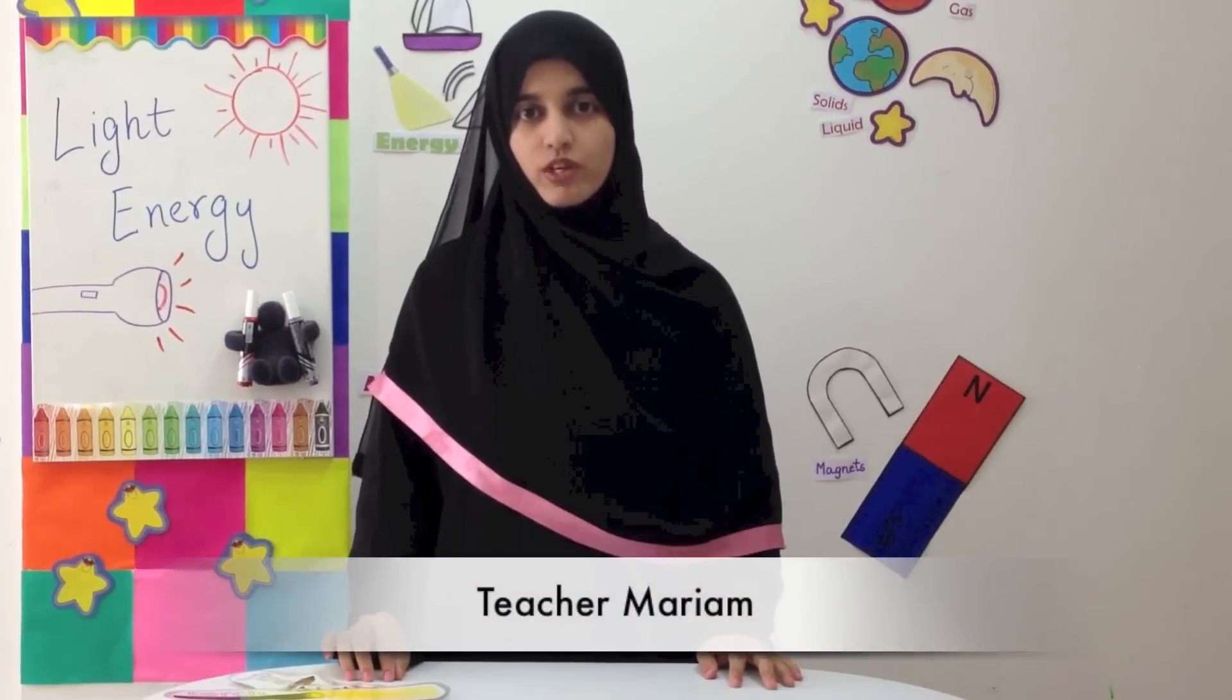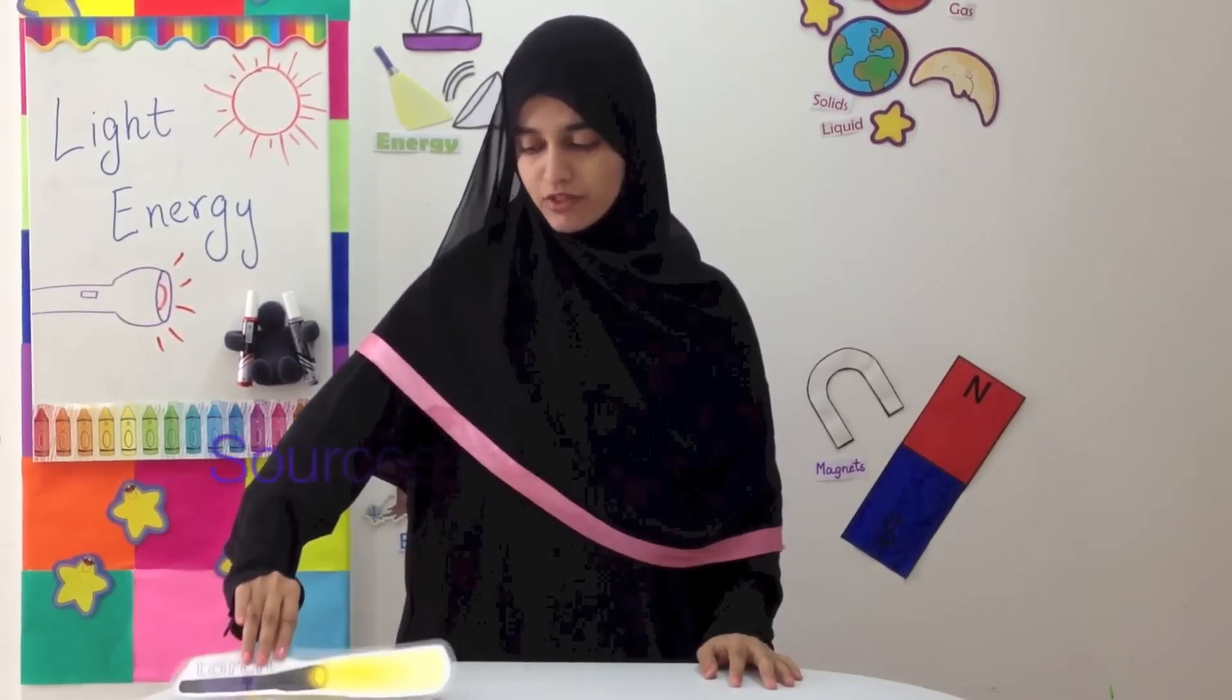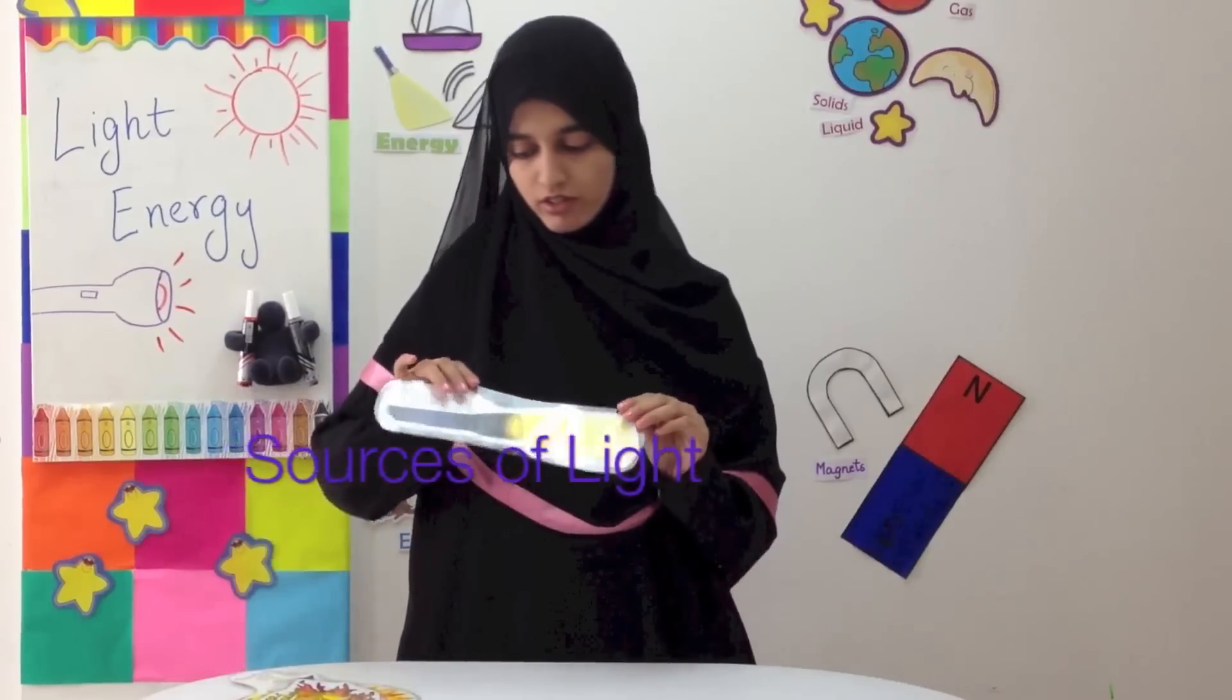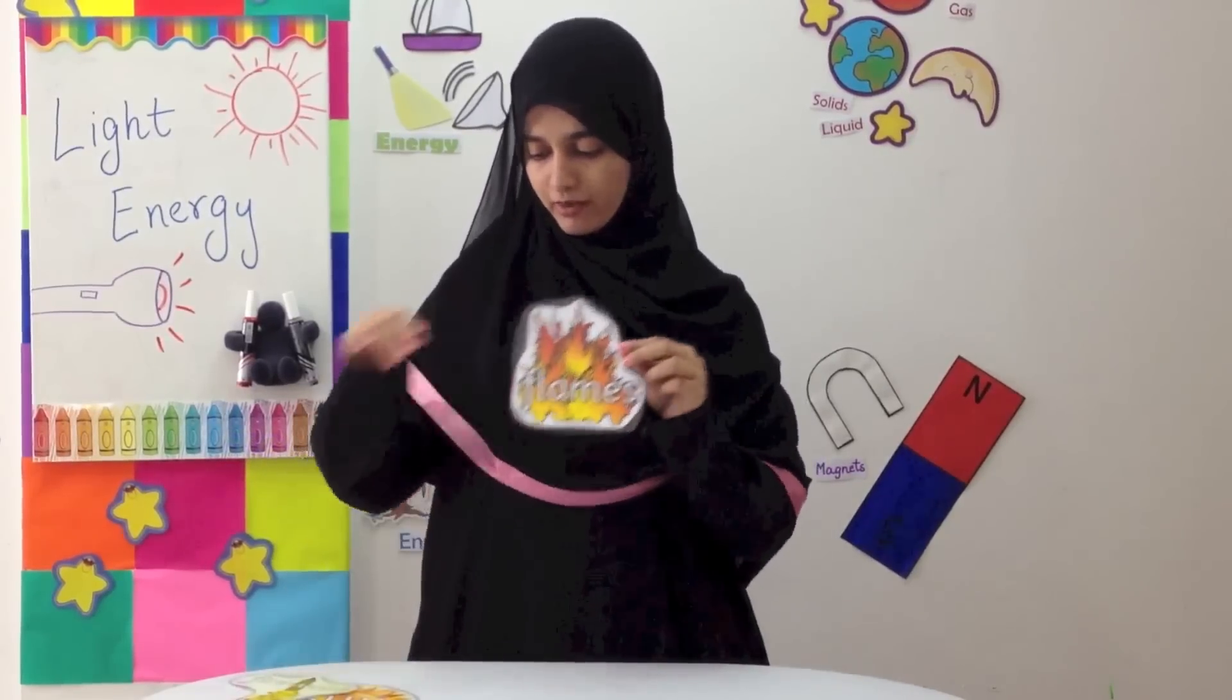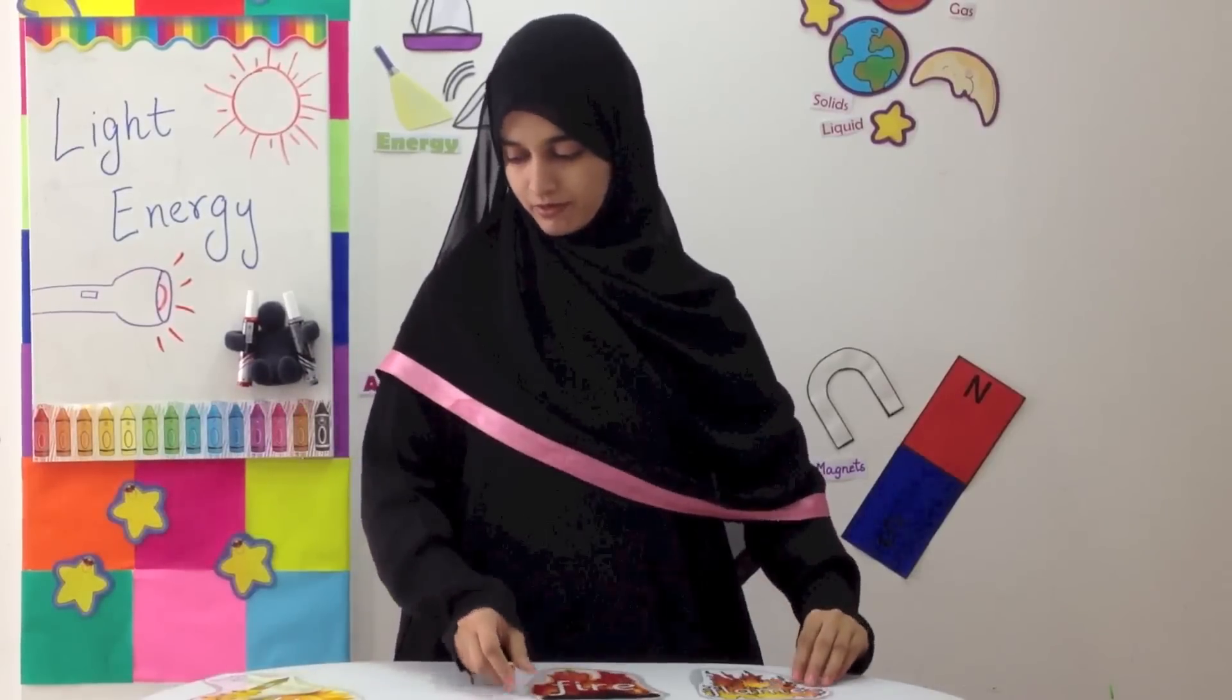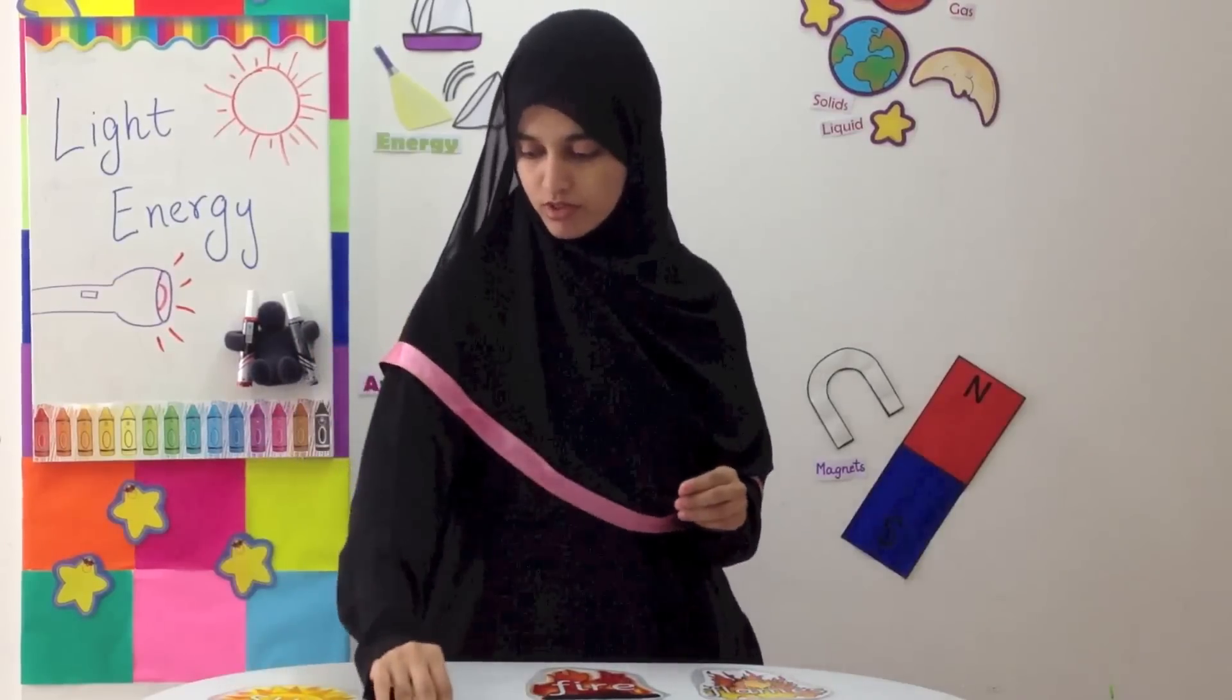There are different forms of energy. One of the forms of energy is light. Here I have pictures of different sources of light energy. I have a torch, flame or fire, then fireworks. We get light from these sources.